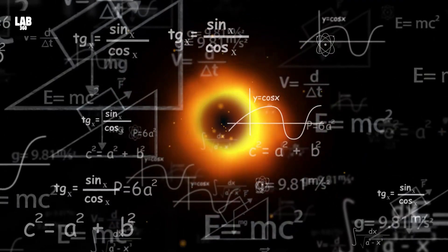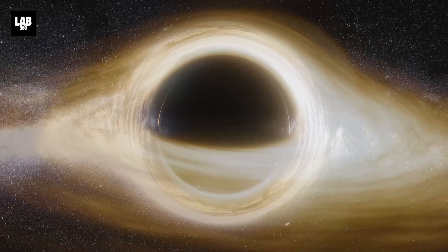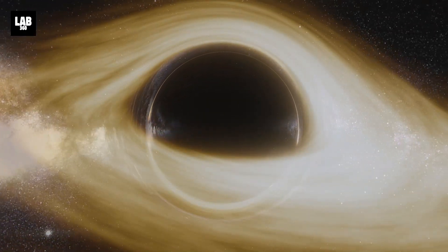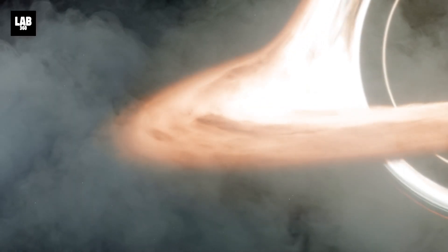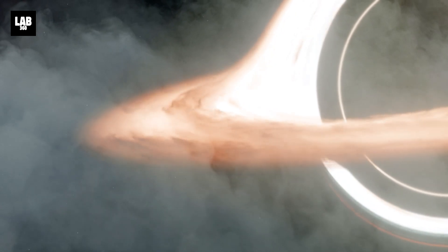No one yet knows for sure how they form as many theories abound. Black holes can either form by accreting or accumulating matter or by the merger of other black holes. A few supermassive black holes accrete the hot gas surrounding them at superfast rates as they spin.